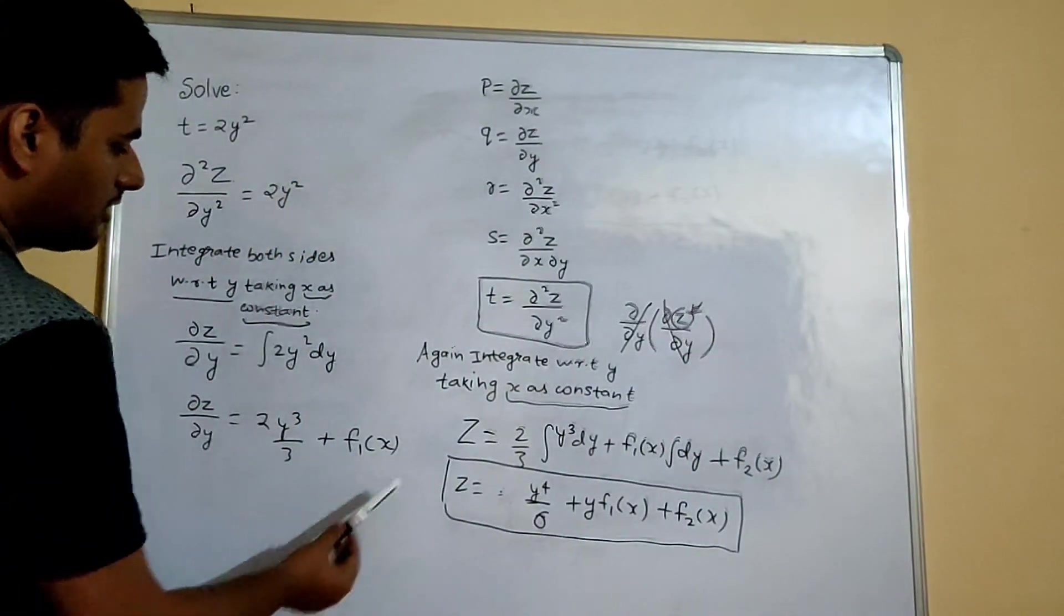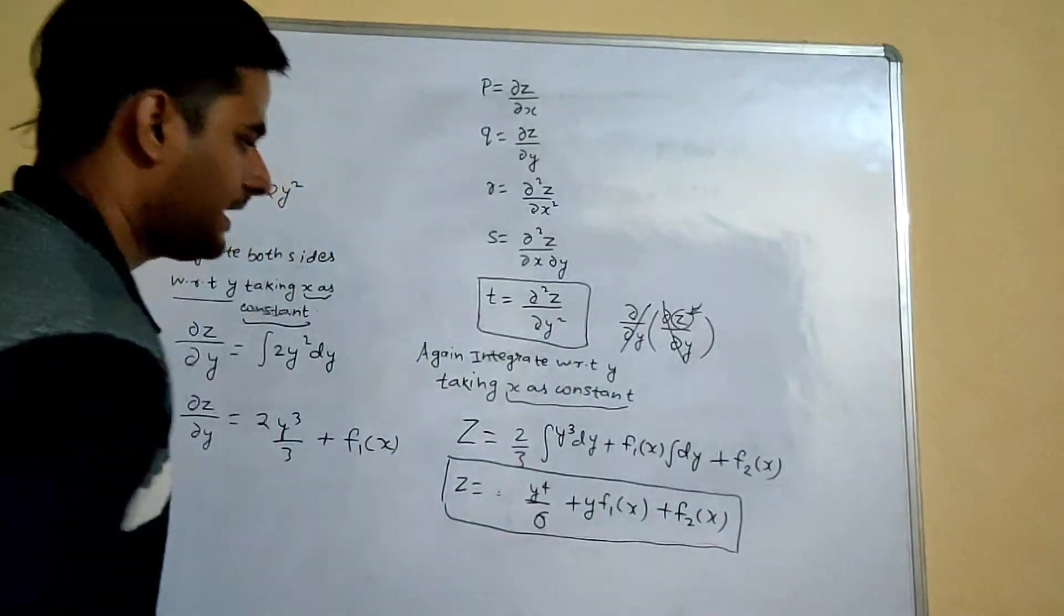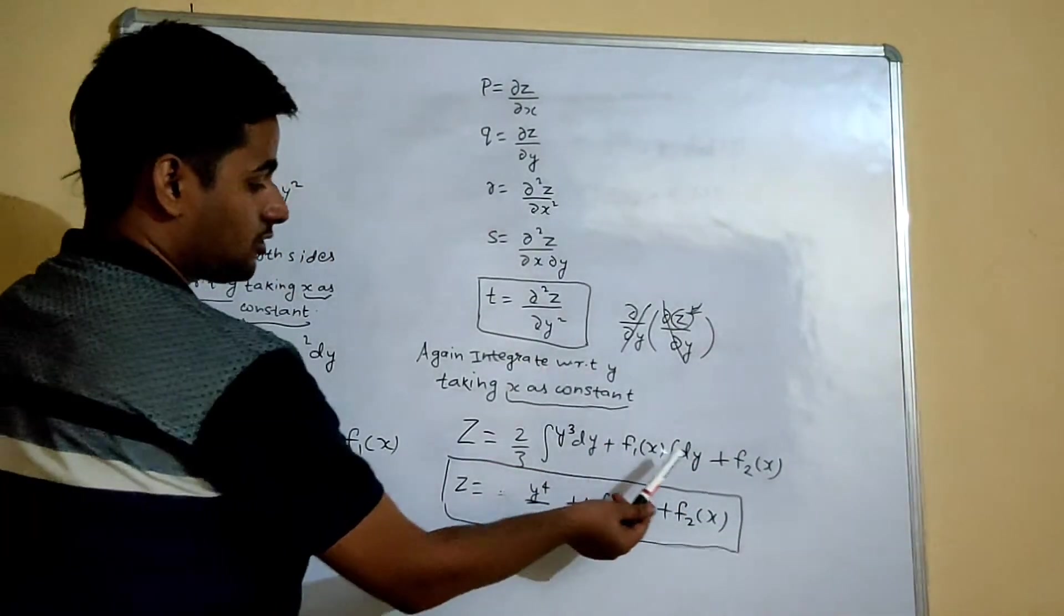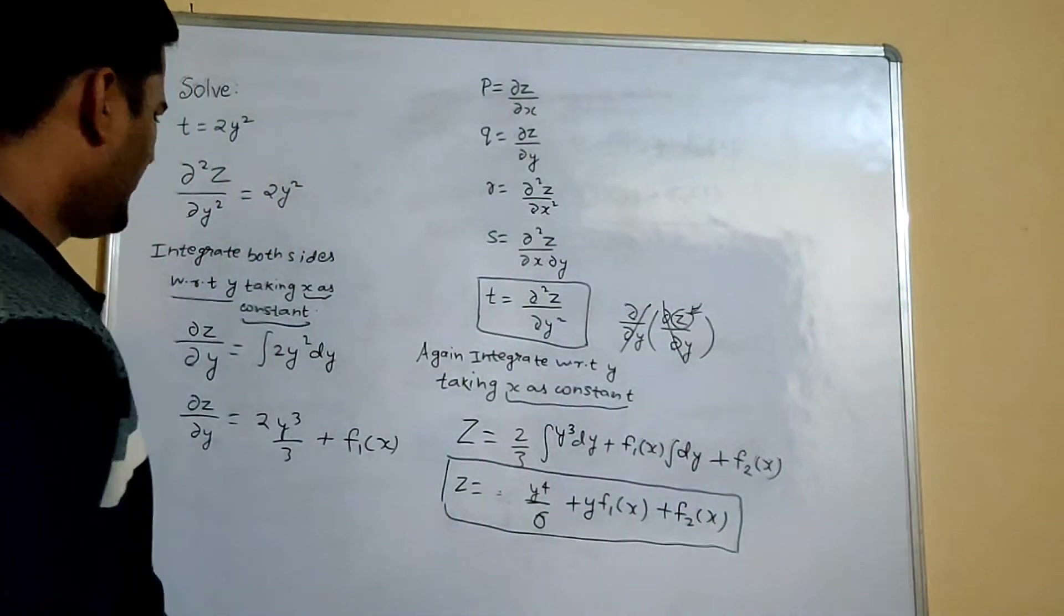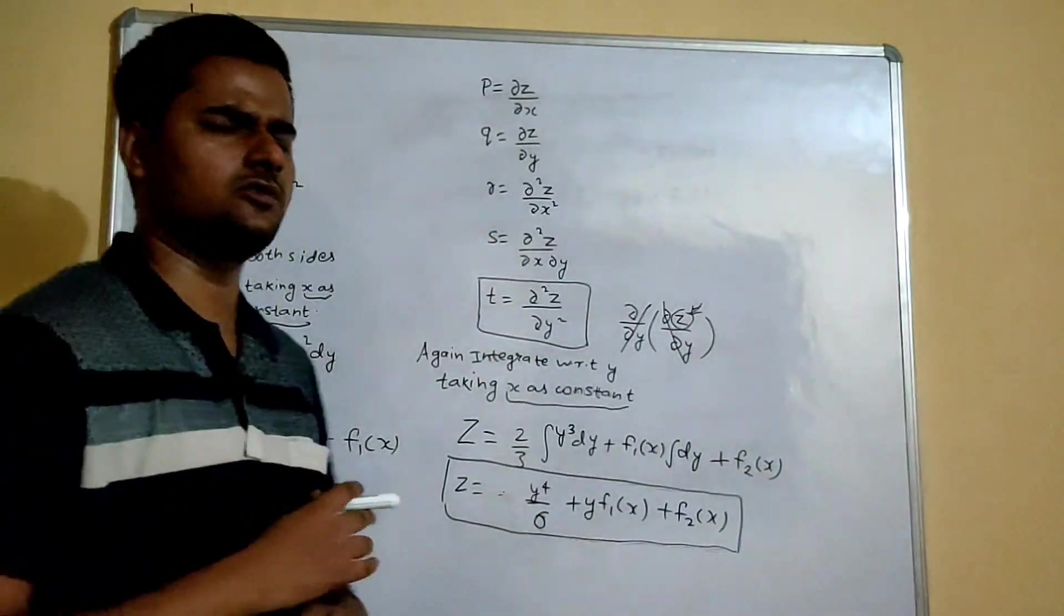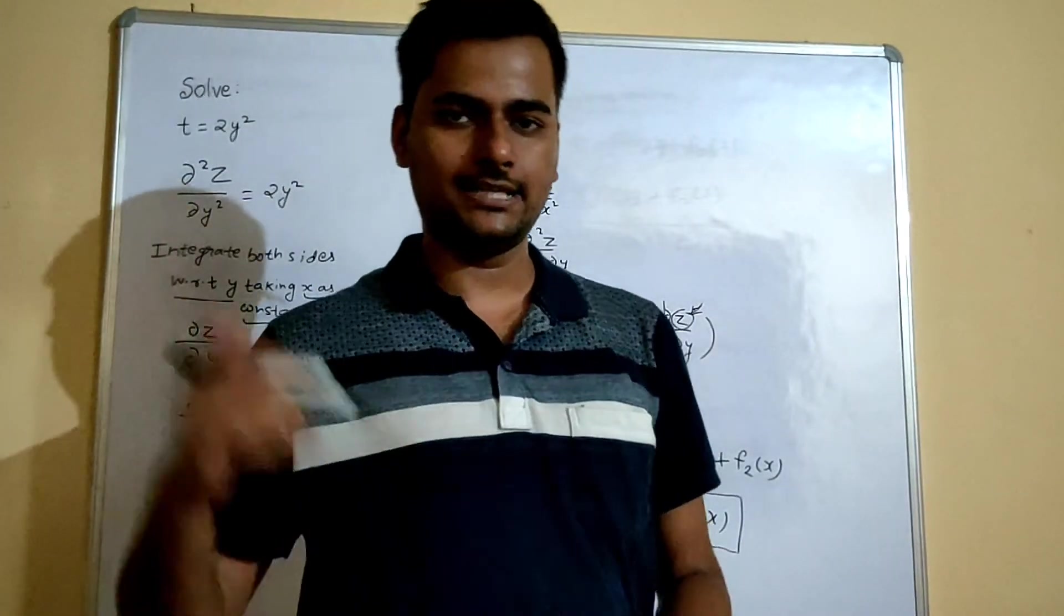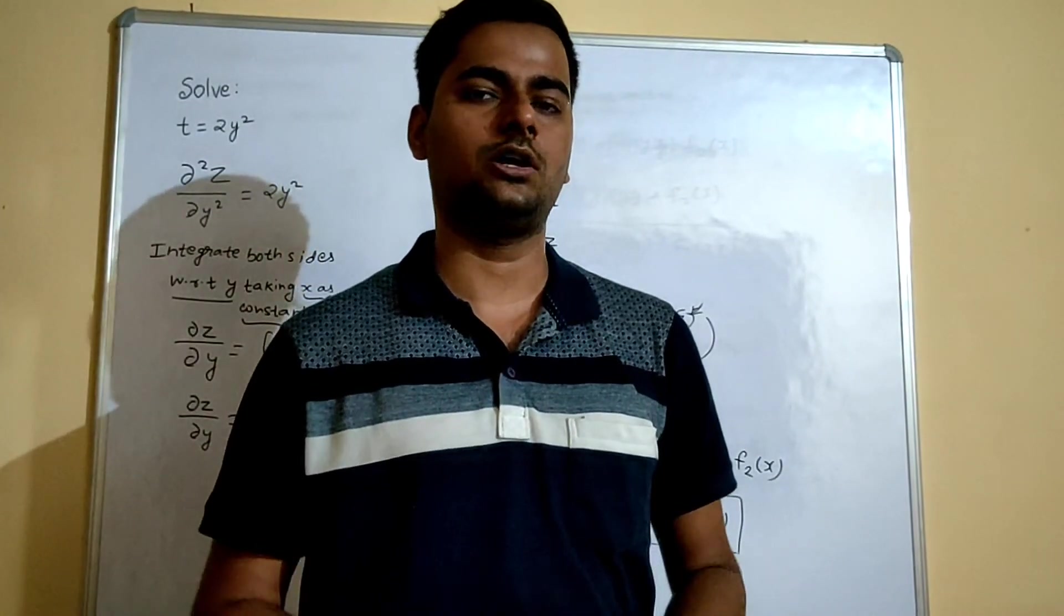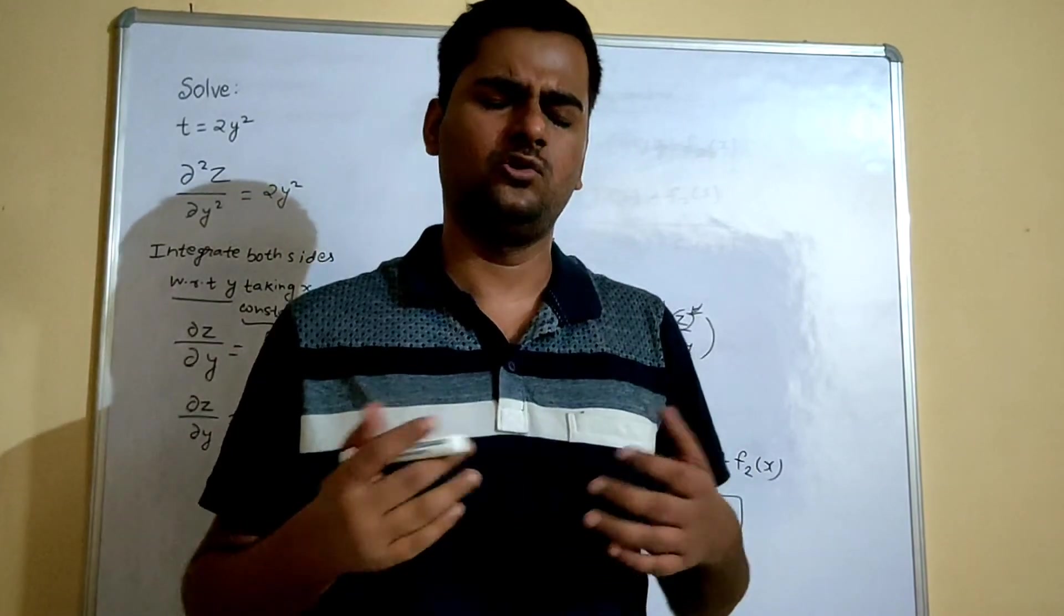In order to remove next del by del y which was inside, again we integrated. Because we took x as constant, so the constant of integration was also in terms of x in all the cases. It's a pretty easy question to solve as far as PD is concerned. And this method is known as method of direct integration.